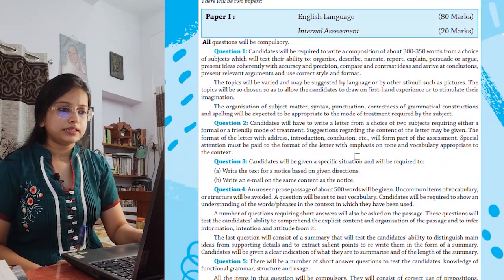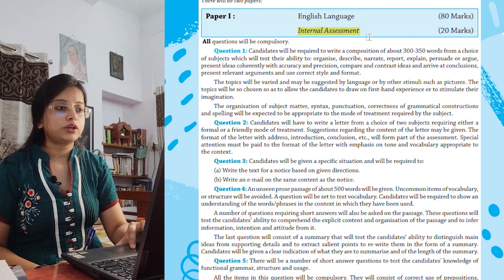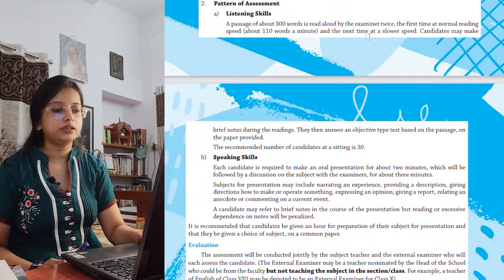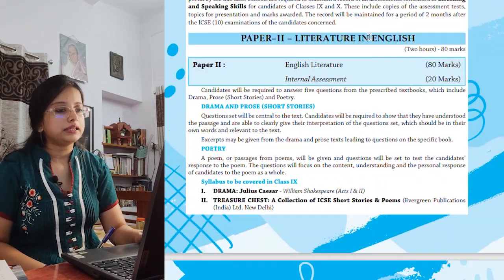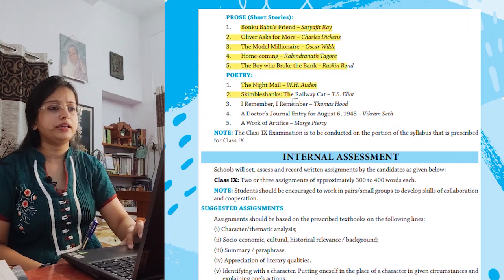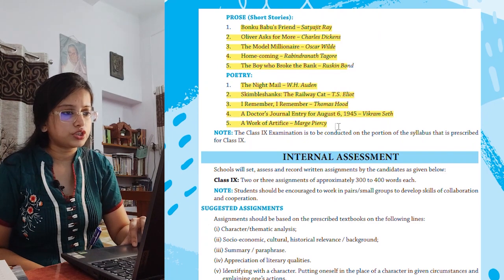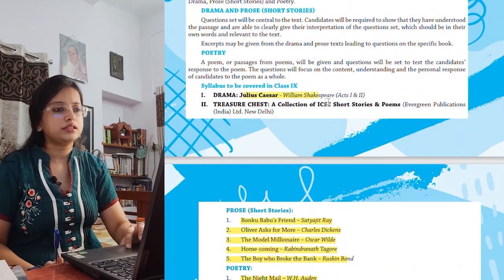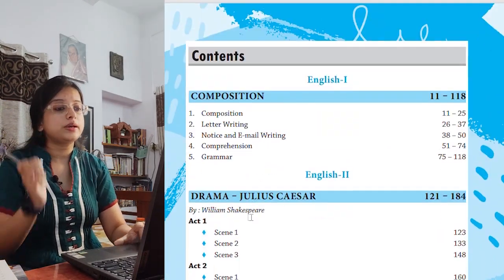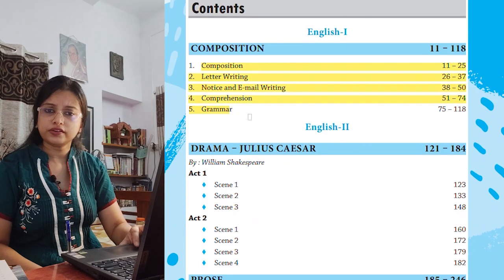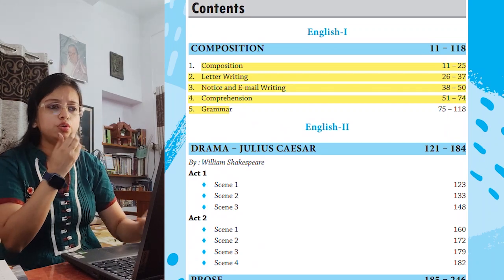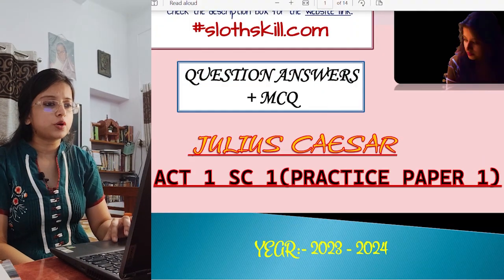The book covers internal assessment format, question formats, number of marks, and how to write answers. Paper 2 covers English literature topics such as Bonku Babu, Oliver Asked for More, Model Millionaire, Homecoming, poetry, Nightmares, Kimble Shanks, I Remember, Doctor's Journal, Work of Artifice — along with Julius Caesar Act 1 and Act 2. English language covers composition, letter writing, notice, email, comprehension, and grammar.